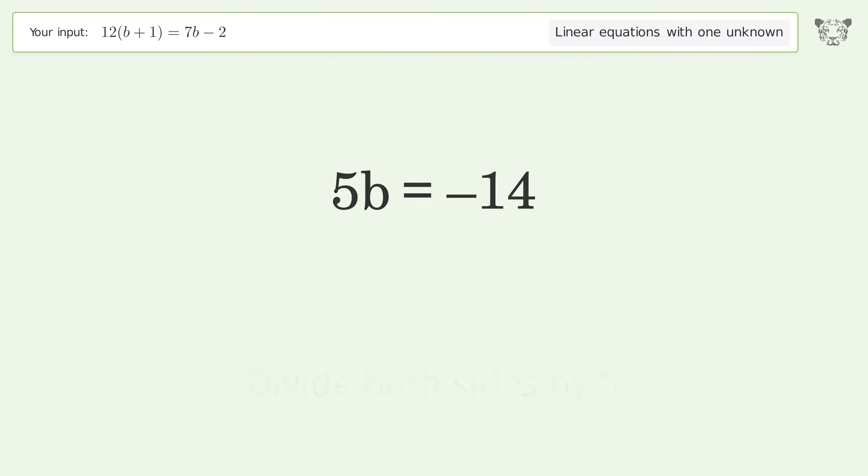Isolate the b. Divide both sides by 5. Simplify the fraction.